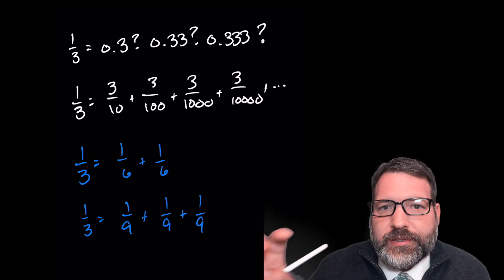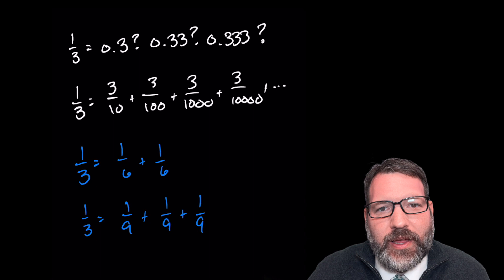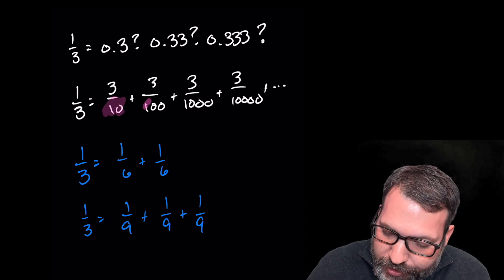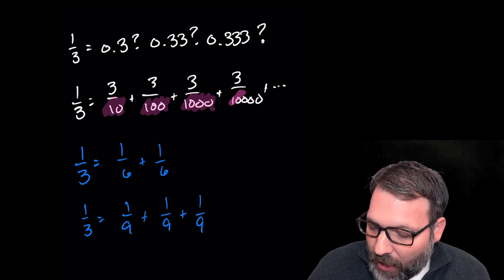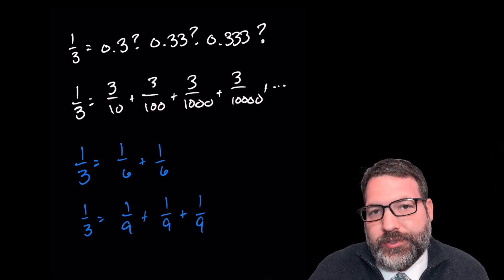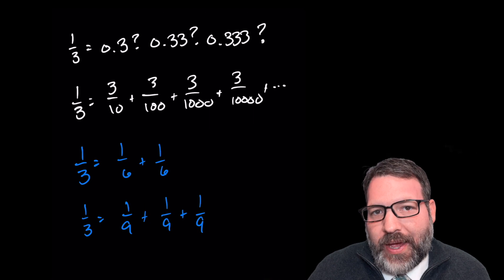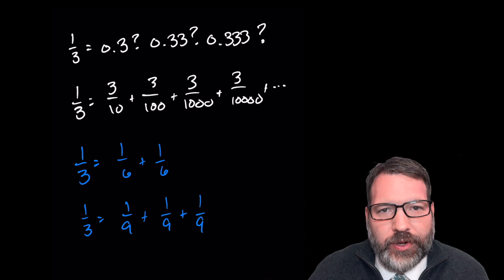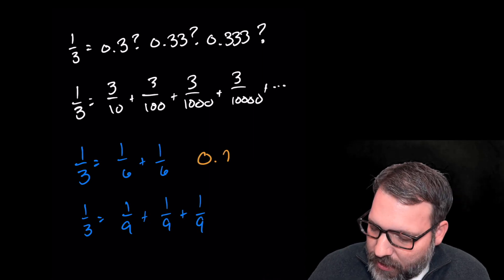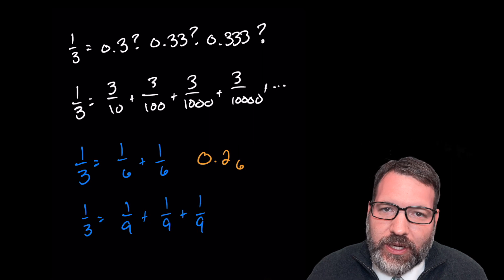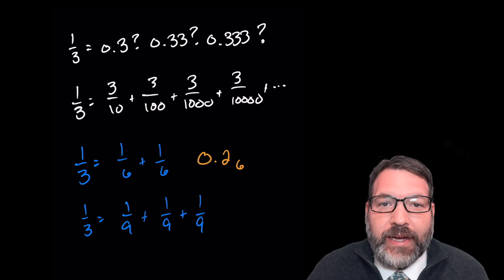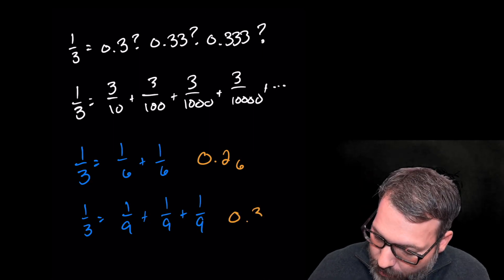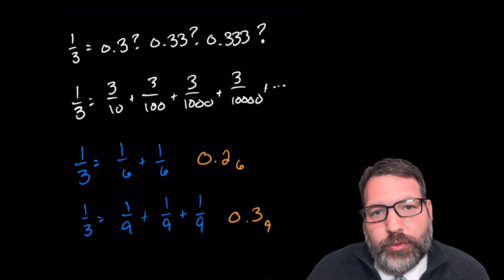The only reason that one-third repeats as a decimal at all is precisely that in the decimal number system, we're interested in expressing numbers over some power of ten — one hundred, one thousand, ten thousand, and so on. If we were in a different base system, we wouldn't care about expressing it as tenths, hundredths, thousandths. We could just as easily express it as two-sixths in the base six number system — as a heximal, it would be a terminating heximal. Or in the base nine system, we would represent it as zero point three nines.